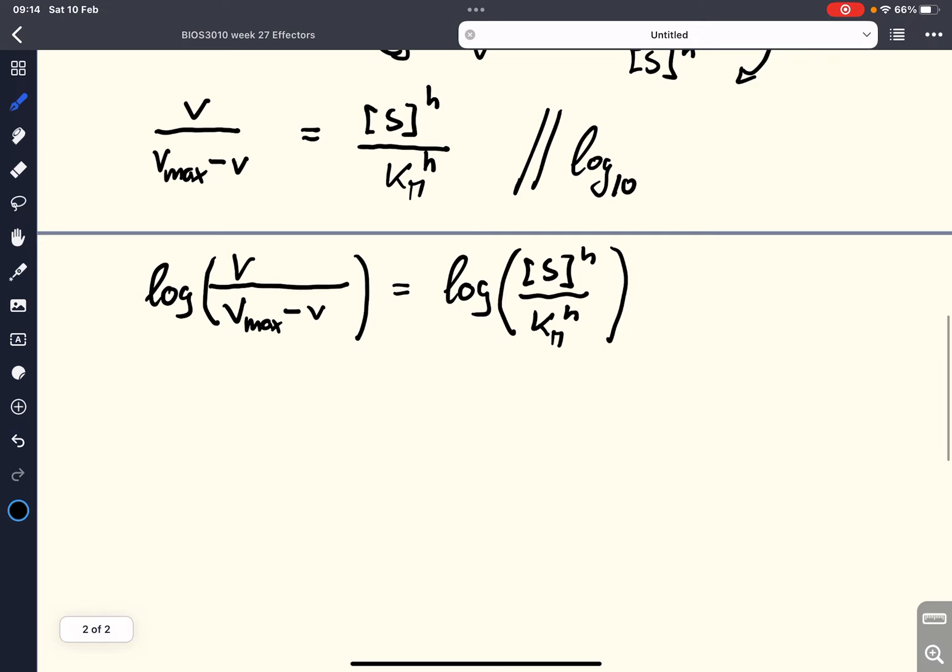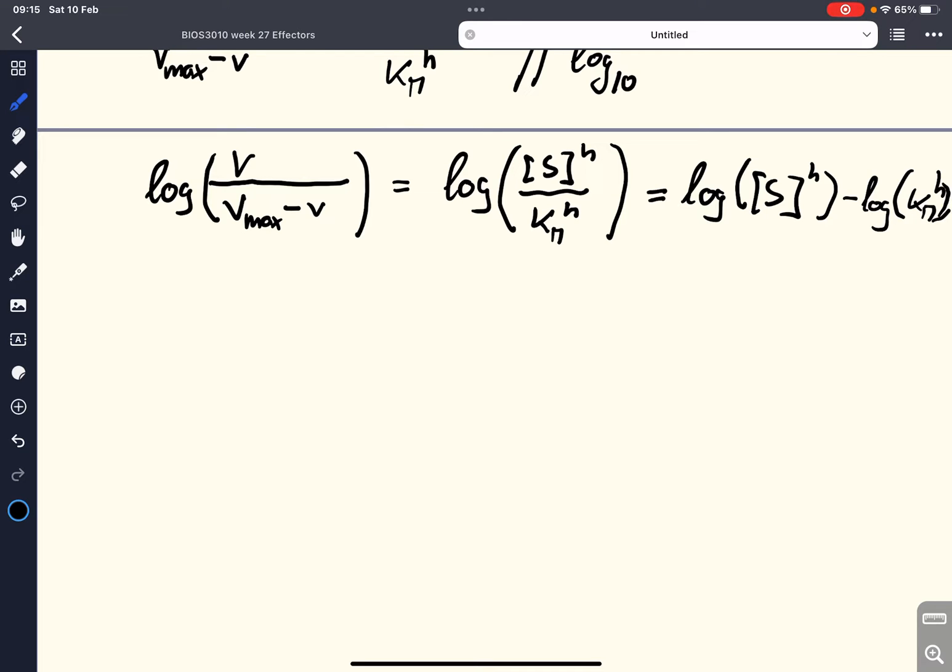And we can do a little bit with this right-hand side. We know that the log of a fraction can also be written as log of S to the power of H minus log of Km to the power of H. And we can order that slightly more neatly.